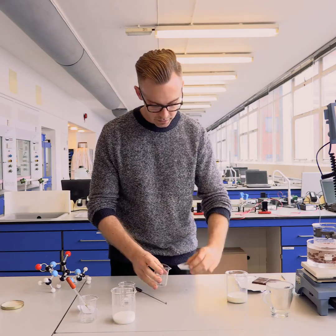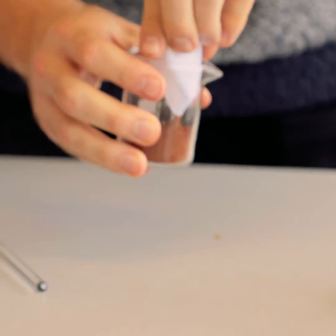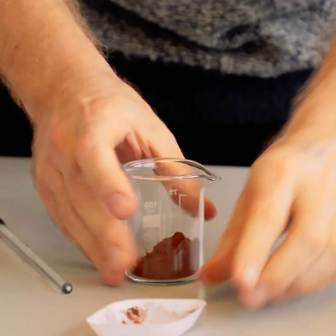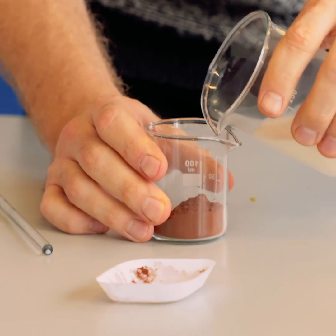So what we're going to do is add the cocoa powder to a beaker, and then add a small amount of milk in order to make a paste.